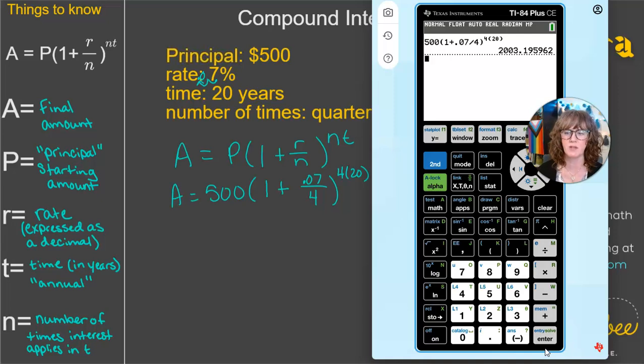All right, so then we wind up with $2,003.20. We're going to round to the nearest cent. So two place values after the decimal there.